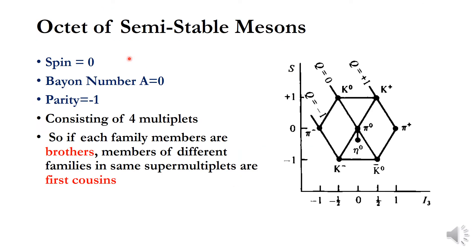We will now see some examples of this classification. The first is the octet of semi-stable mesons. The name 'octet' refers to the eight elements in this family. This octet is represented in the S-I₃ plane, where S is strangeness along the y-axis and I₃ is the third component of isospin along the x-axis.